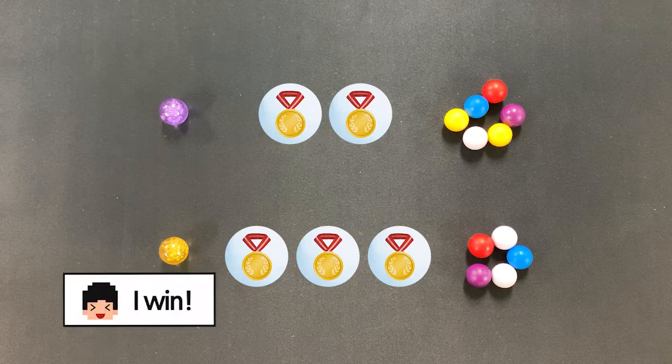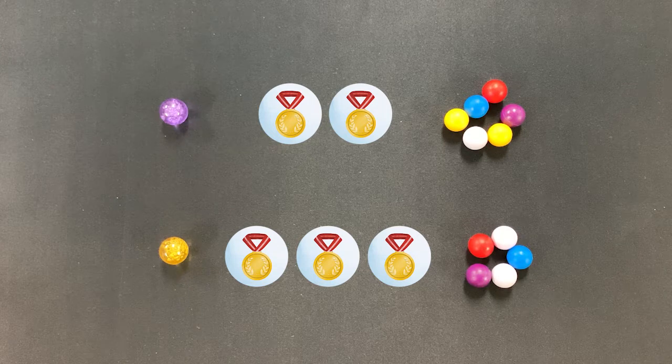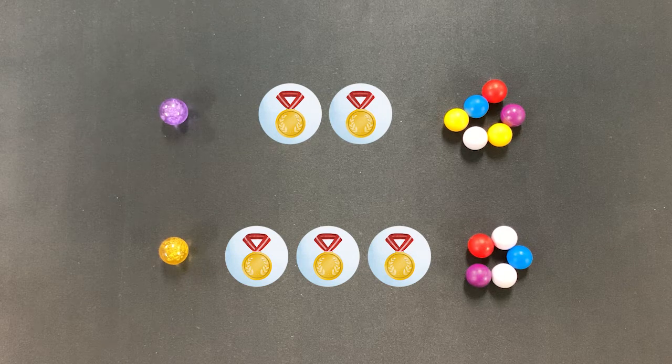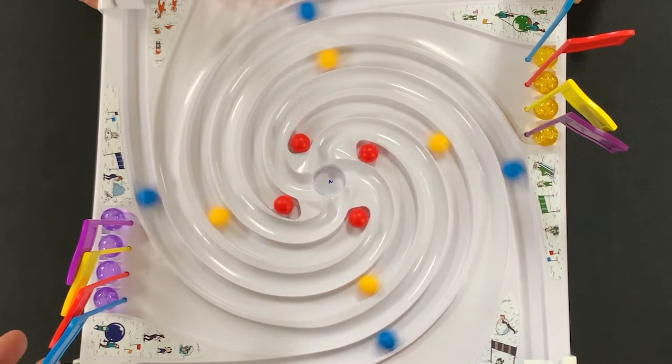In case of a tie, the player with the most metal token wins. If still a tie, the players play a rematch to determine the winner. And that's how you play Marble Bobsleigh.